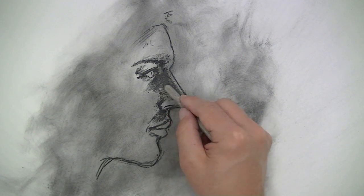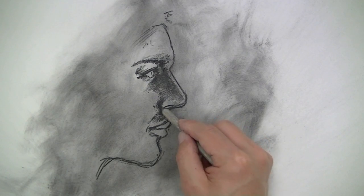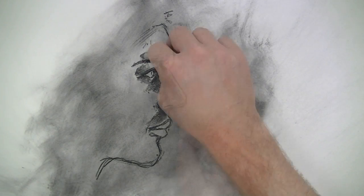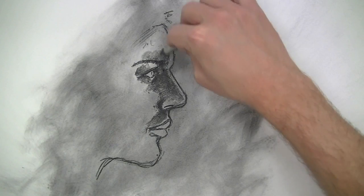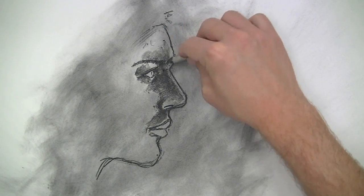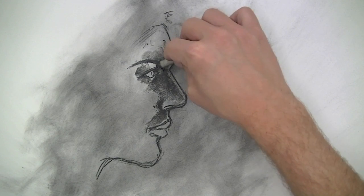There are going to be some areas of highlight, intense highlight, that hit the outer portions of the contours and we'll establish those in a moment with an eraser. To create areas of smoother transition I'm going to use a blending stump and just work some of that compressed charcoal into the surface.